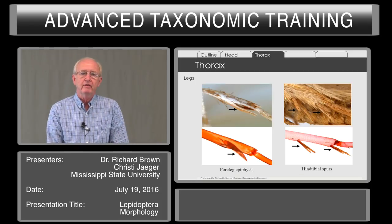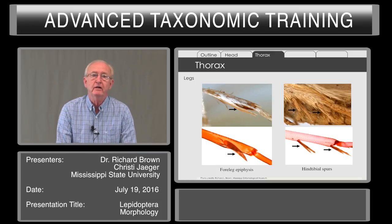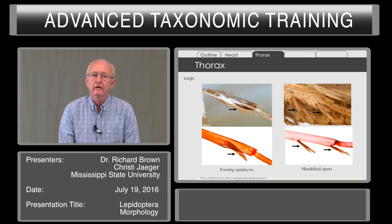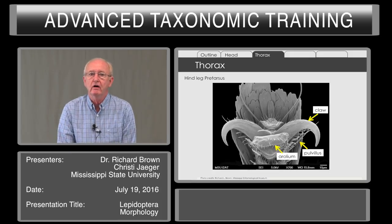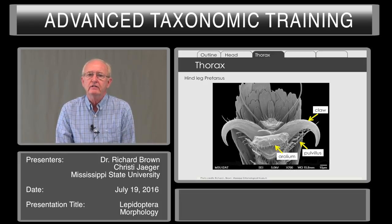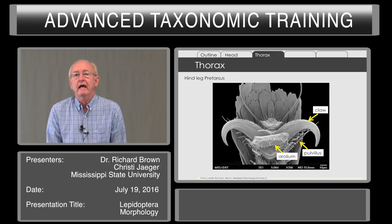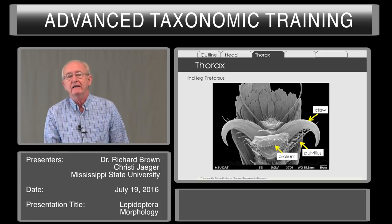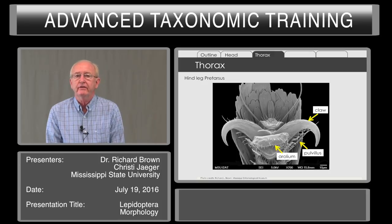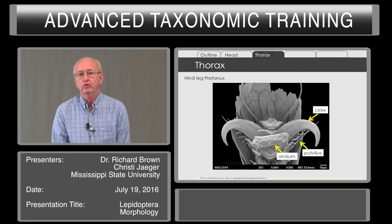The legs — beginning with the foreleg — have an epiphysis that's unique to the Lepidoptera. If you take the scales off, you can see this little projection thought to be used for cleaning the antennae. The hind leg has four tibial spurs, whereas the middle leg has two spurs, and the number of spurs can differ between families. If we look at the pre-tarsus — the toes of the moth — we see a claw, a pulvillus, and an aroleum. The pulvillus aids landing on rough surfaces, while the aroleum gives off a compound that makes it adhere to smooth surfaces; on a pane of glass, a moth can hold up to eight times its weight.